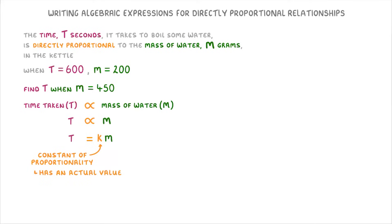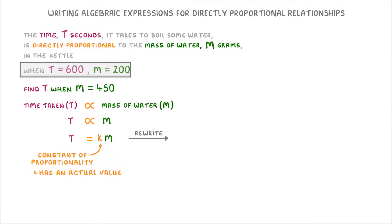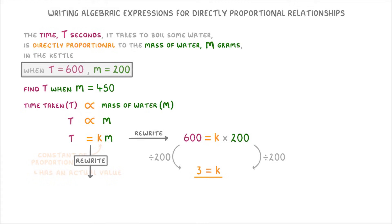This constant has an actual value, like 0.2, 3, or 50. And to find it, we need to rewrite the equation using the values from the question, which in this case would give us the time of 600 equals K times the mass of 200. So then we can divide both sides by 200 to find that 3 equals K. And now that we know that K is 3, we can rewrite our equation as T equals 3M. So we now have an algebraic equation that links time and mass, which we can use to convert between the two of them.